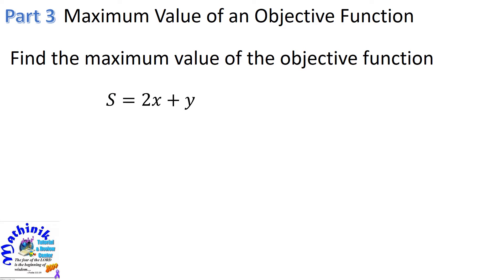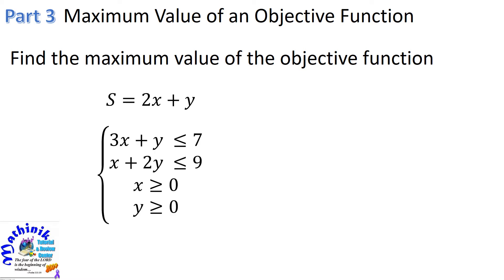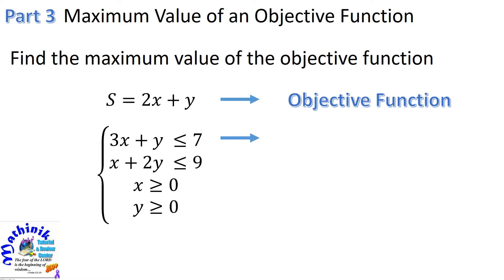Let us have this equation: S is equal to 2x plus y, and the system of linear inequalities: 3x plus y is less than or equal to 7, x plus 2y is less than or equal to 9, x is greater than or equal to 0, and y is greater than or equal to 0. We take S equals 2x plus y as our objective function, and the system of linear inequalities as our constraints. The constraints are the restrictions that lead to the attainment of our goal, and that is to find the maximum value of our objective function.